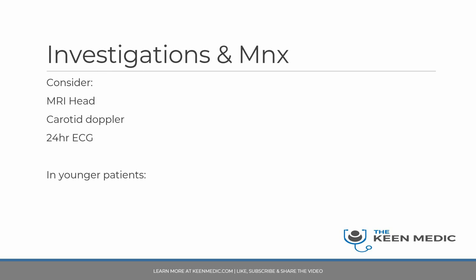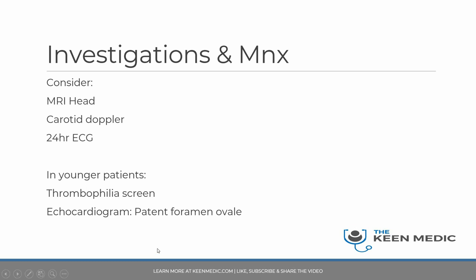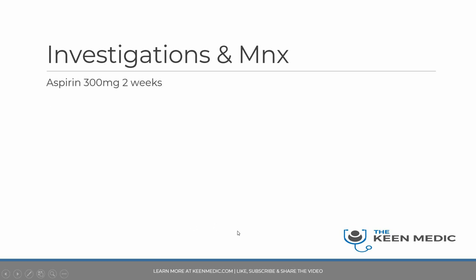In younger patients — for example, under 20 years old — a stroke is a very significant event and you need to investigate all possible avenues. This includes a thrombophilia screen because the blood may be hypercoagulable, possibly due to vasculitis or autoimmune conditions, and an echocardiogram to look for patent foramen ovale for paradoxical emboli. Aspirin 300mg for two weeks is standard treatment for all ischemic strokes, followed by clopidogrel 75mg lifelong.